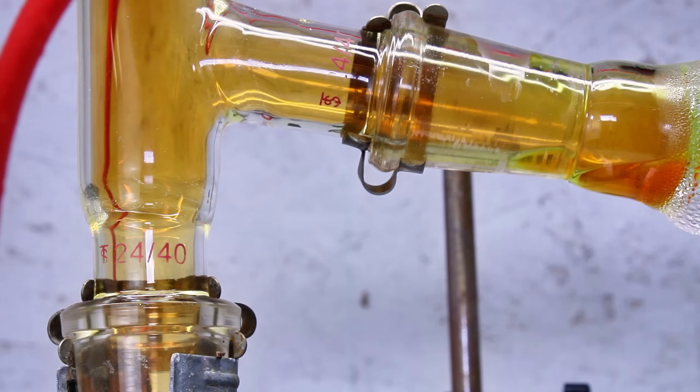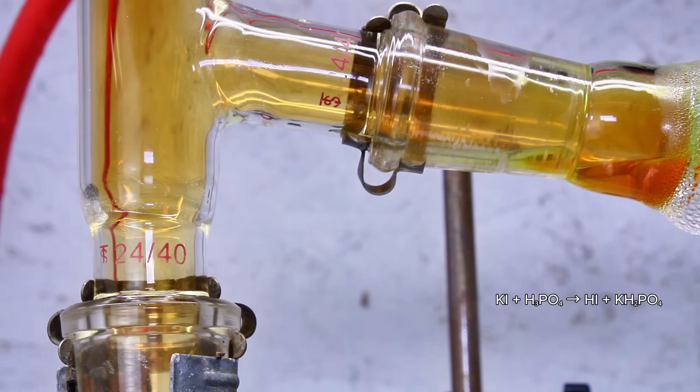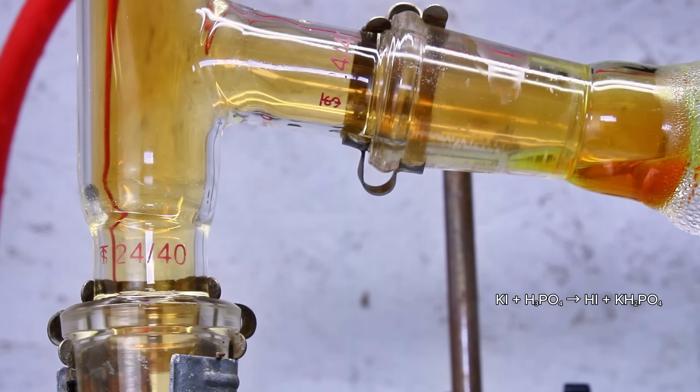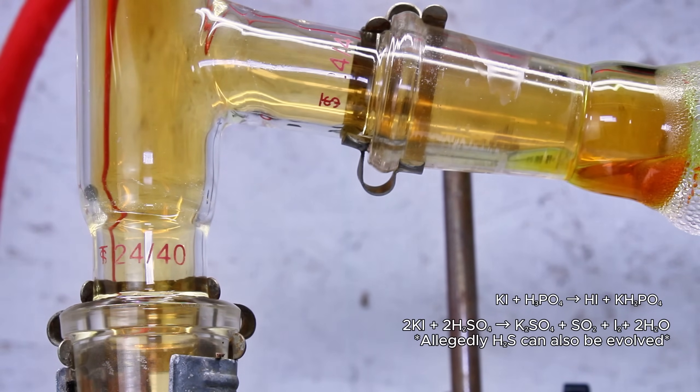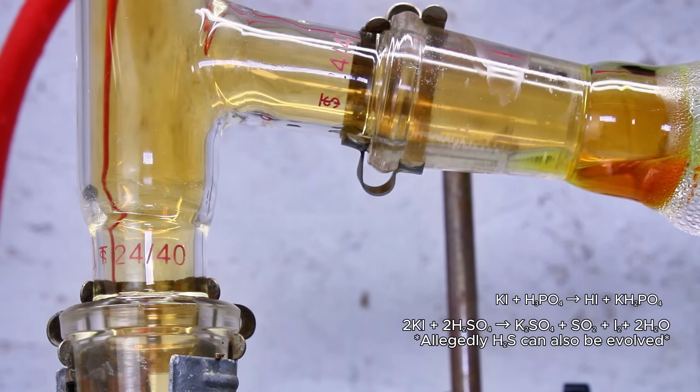On a side note, this is the exact principle that allows for the formation of the very strong hydroiodic acid from potassium iodide and the fairly weak phosphoric acid. And in fact, this is actually one of the few viable ways to do this reaction, since sulfuric acid would simply be reduced by hydroiodic acid to hydrogen sulfide and elemental iodine.